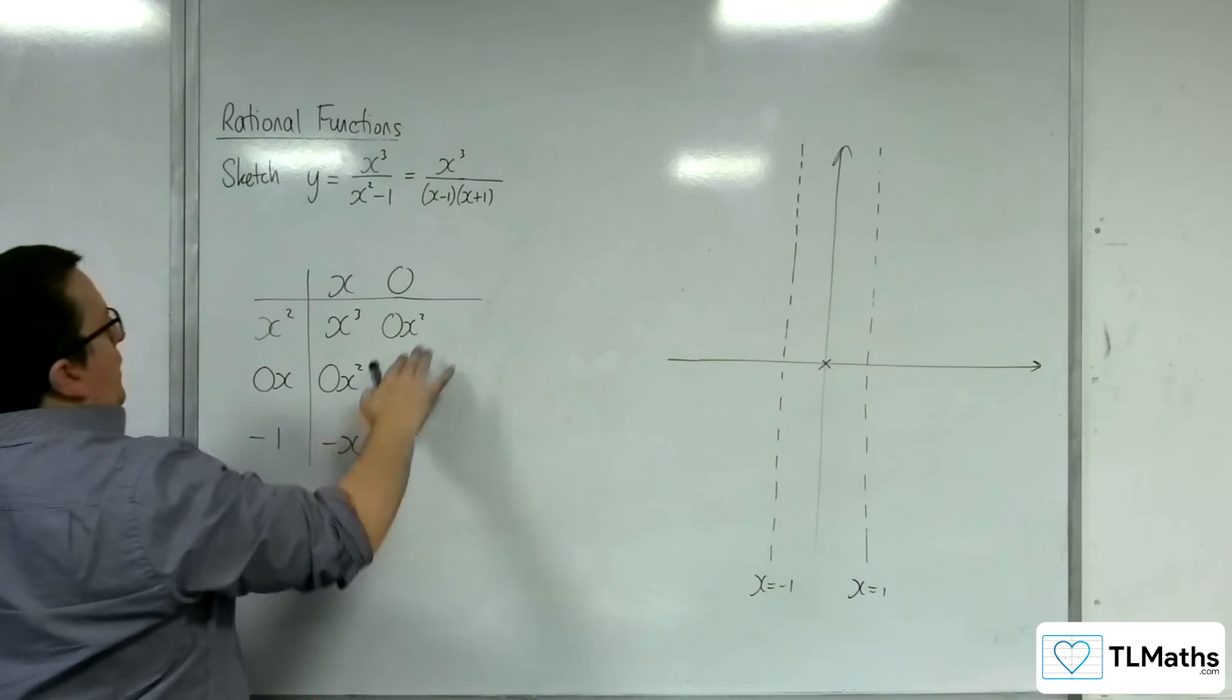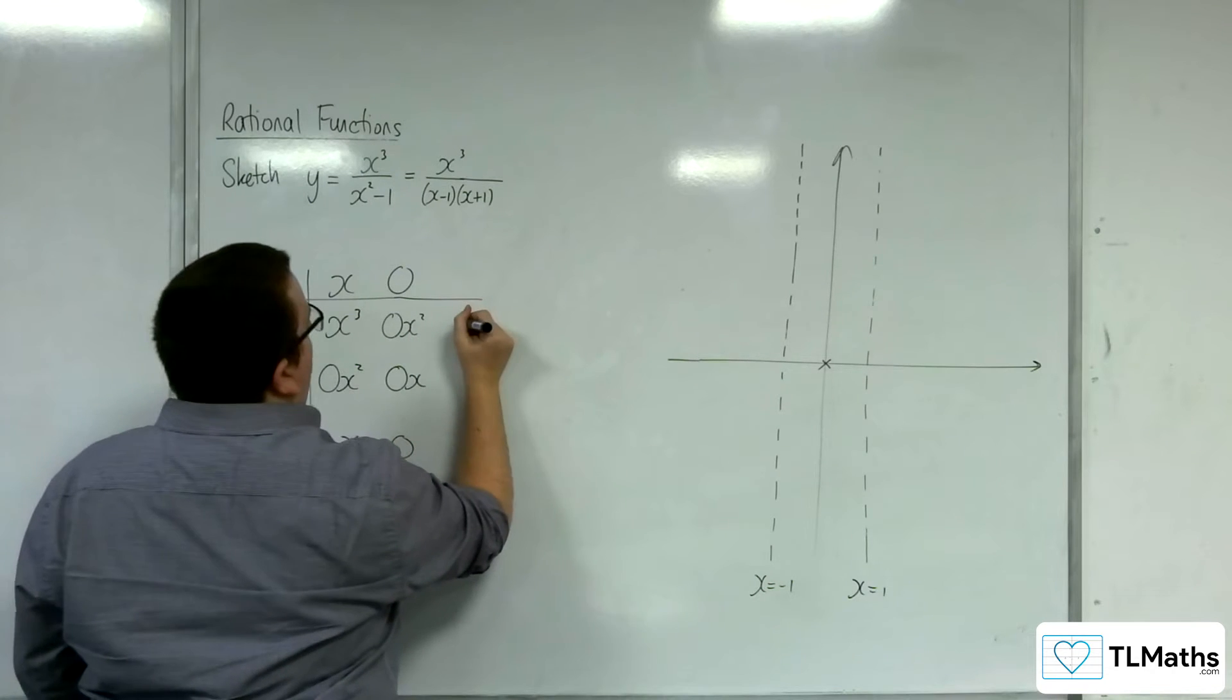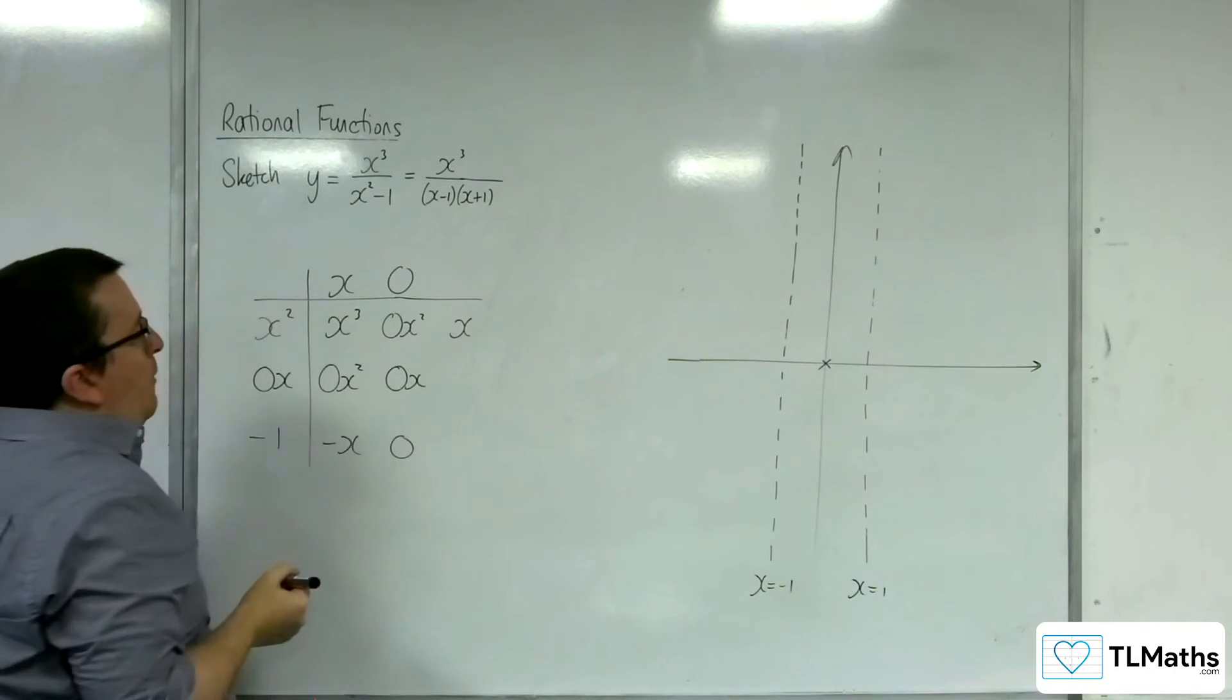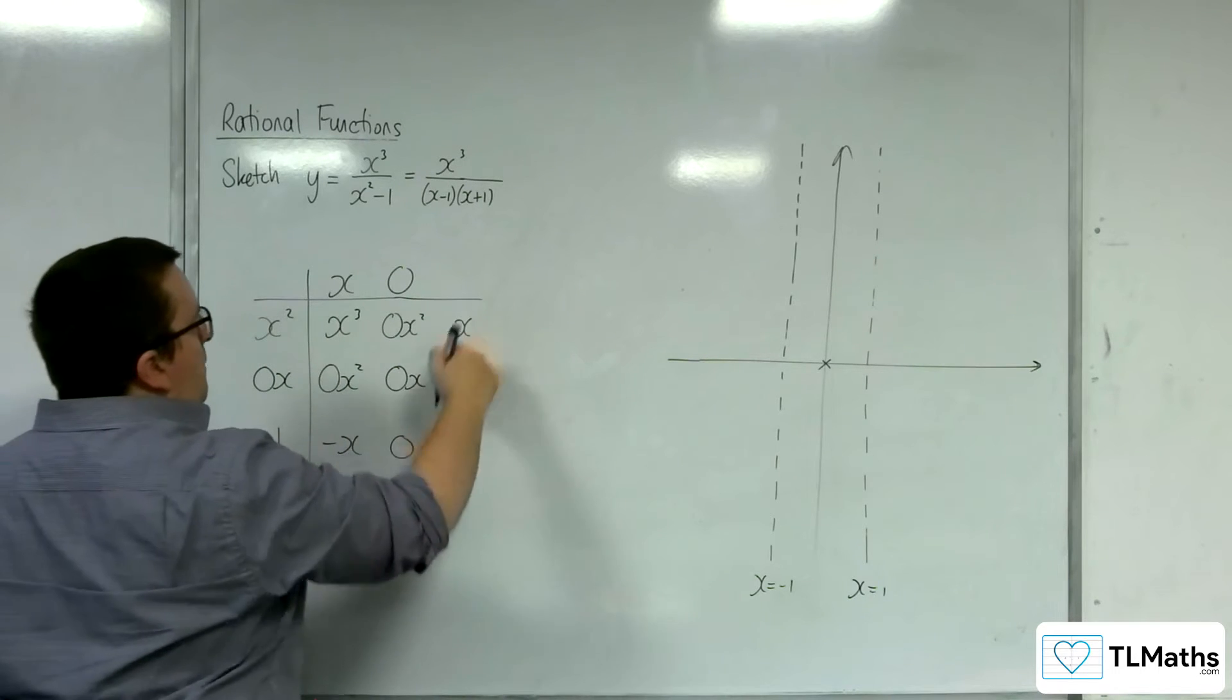Now I don't want any x's, so -x + 0x + x will add up to 0x. I can't divide anymore, so this is going to be my remainder here.